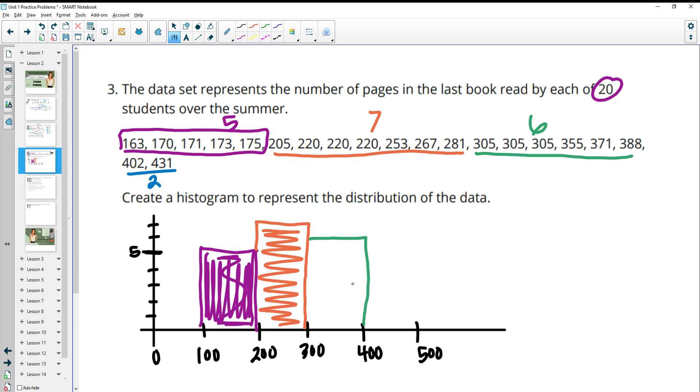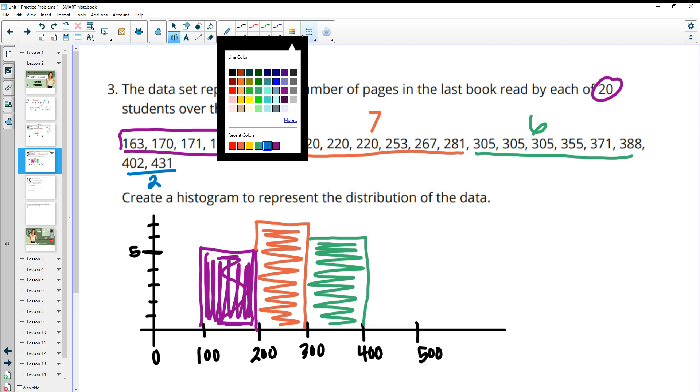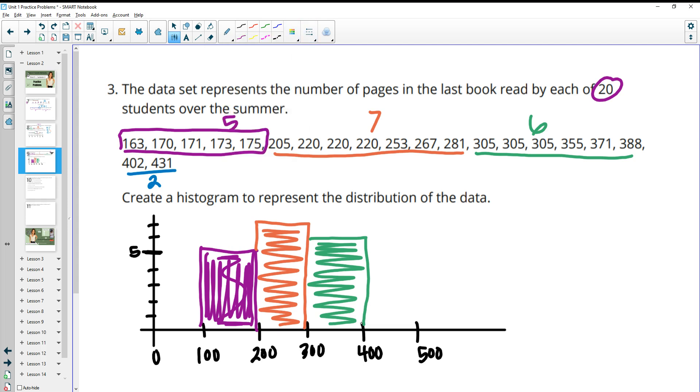And then between 400 and 500 we had two data points, so that's going to go to about here. So you can just kind of look and make sure that your height goes the number of data points that were in there. And then that would be your histogram.